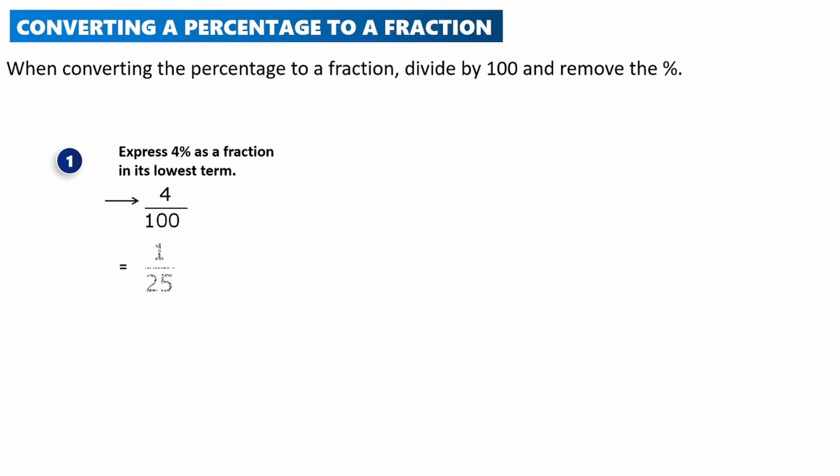Once we simplify 4 over 100 — 4 into 4 goes one time, and 4 into 100 goes 25 times — so the answer is 1 over 25. We've converted 4 percent into the fraction 1 over 25.